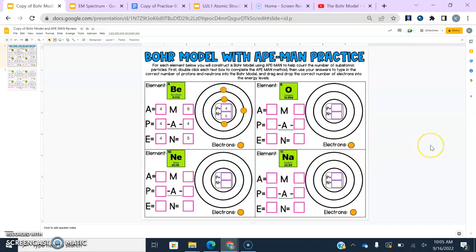Let's do one that has a little bit more. We'll go ahead and do sodium together. So sodium is atomic number 11 and its atomic mass we're going to round to 23. So let's do our Ape Man. Our atomic number is 11, our protons are 11, and our electrons are also 11.